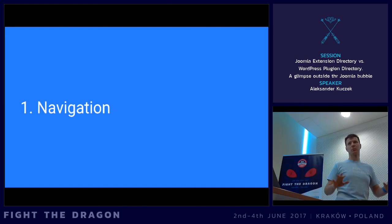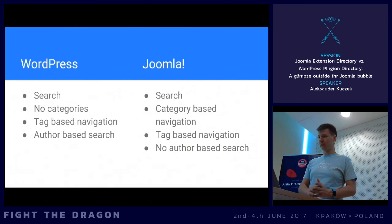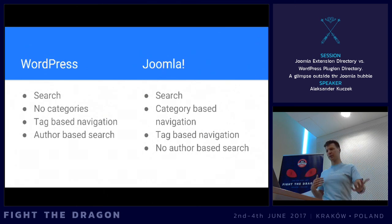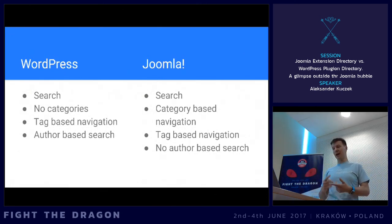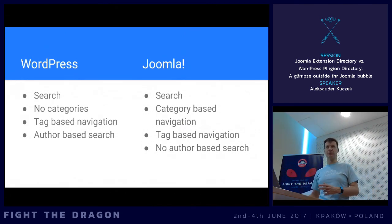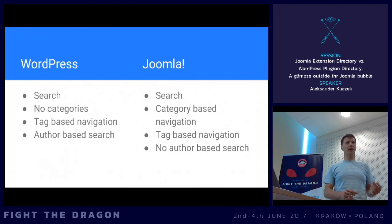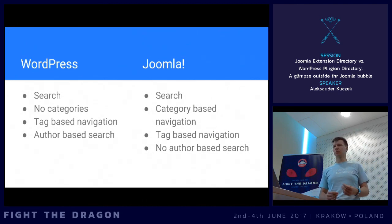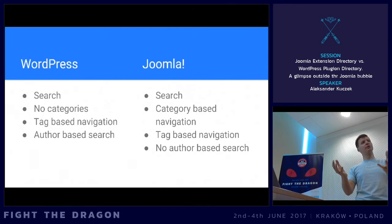Let's look at navigation first. What's the difference in navigation between these two? It's both search-based right now. A couple of years ago in JED we decided to change our category-based navigation into search-based navigation. Category-based navigation is still there but it's a secondary level. We do have type-based navigation and tag-based navigation, but we don't have author-based search. WordPress, on the contrary, is also search-based, but three to five months ago they removed category-based navigation entirely. So even with almost 50,000 extensions, there is no way to browse by category — for example, if you're interested in contact forms, there's no way to limit your search to that.